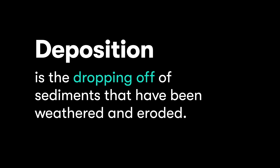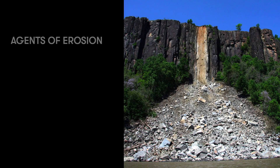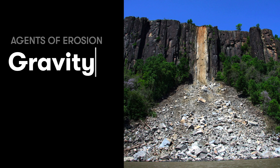Today we're going to look specifically at gravity. We have a little worksheet you can grab from the website so you can follow along. We're beginning our look at the different agents of erosion — different processes on Earth that move sediments along and then deposit them. There are lots of different agents of erosion: water, ice, wind, etc. Today we're going to specifically look at gravity.